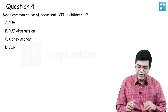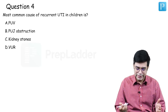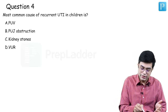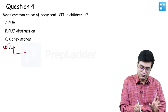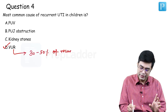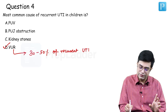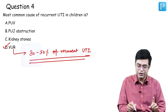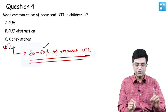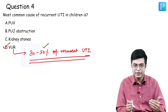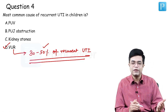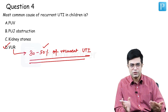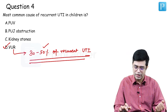Question number four: most common cause of recurrent UTI in children — a one-liner already asked in the past. The answer is vesicoureteric reflux. VUR is responsible for 30–50% of cases of recurrent UTI according to various studies including those from India. Whenever a patient has recurrent UTI, you need to put the patient on antibiotic prophylaxis and investigate for VUR using MCU and DTPA/DMSA scan.